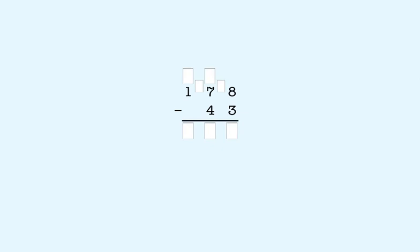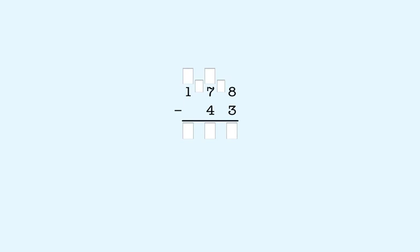Another example: 178 minus 43. We start subtracting in the ones place. 8 is bigger than 3, so we don't need to take a 10. 8 minus 3 is 5. So we put 5 in the ones place in the answer.